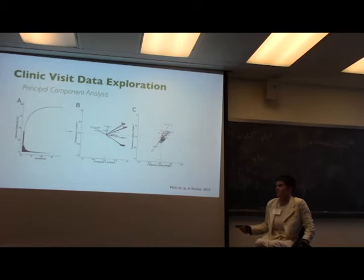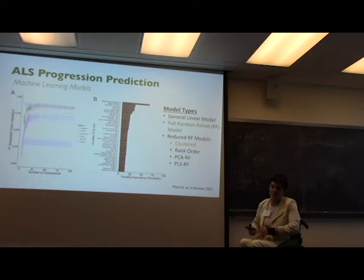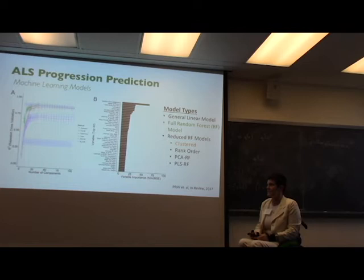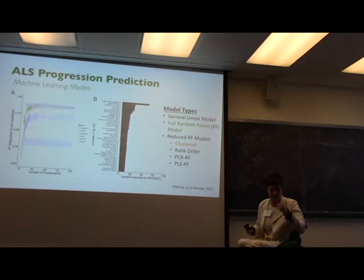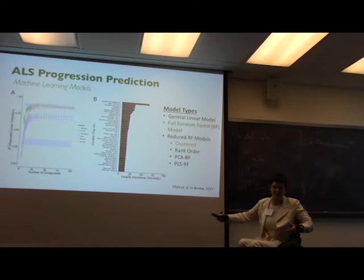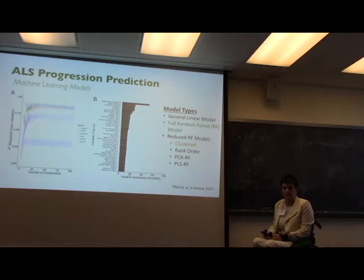Another tool we use a lot is random forest and machine learning. Machine learning is great to predict things like survival because there's so much we don't understand about how survival works in ALS — the average is three years, but some people go ten years. We developed machine learning models to predict, so when a patient comes in based on a certain set of metrics, we know their predicted survival. That's really important for clinical trials because there's so much heterogeneity — based on who you pick for your ALS trial, you're going to dictate the outcome. Being able to predict things using machine learning helps get better clinical trials without skewing results before you've even started.